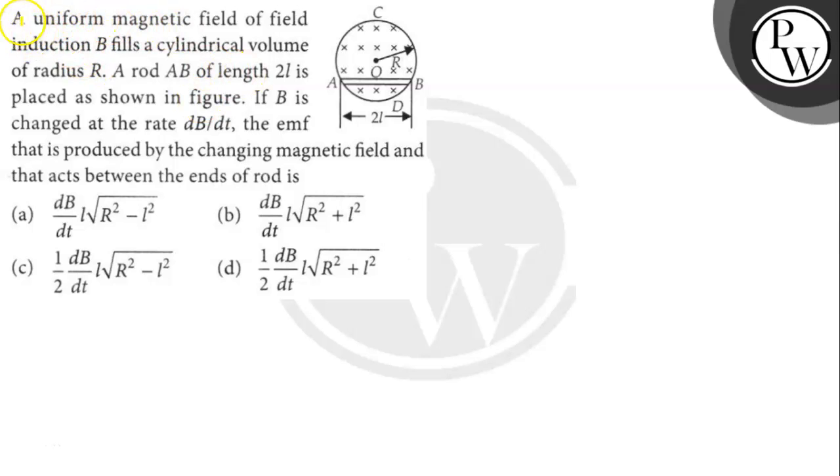Hello Achoo. Let's read the question. The question says a uniform magnetic field of field induction B fills a cylindrical volume of radius R. A rod AB of length 2L is placed as shown in figure.